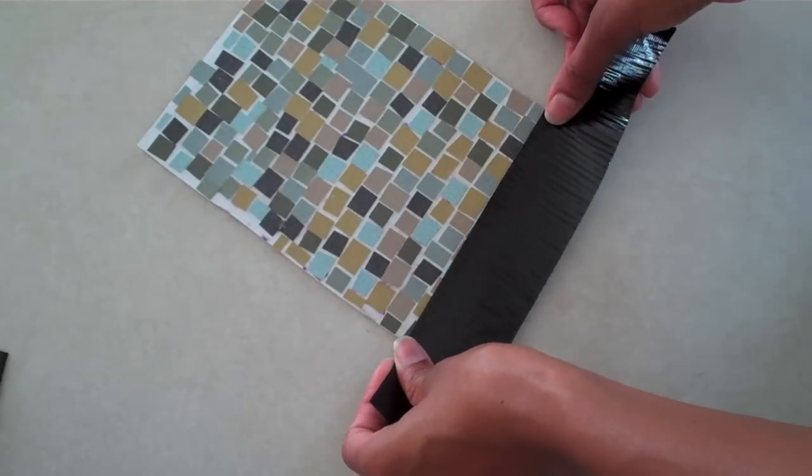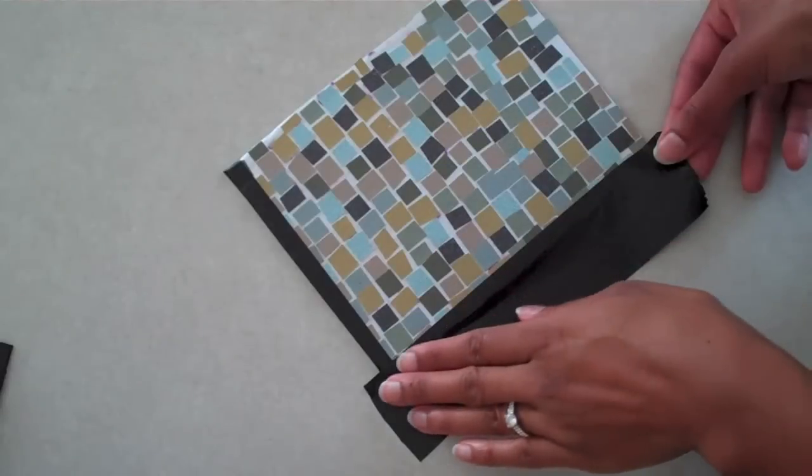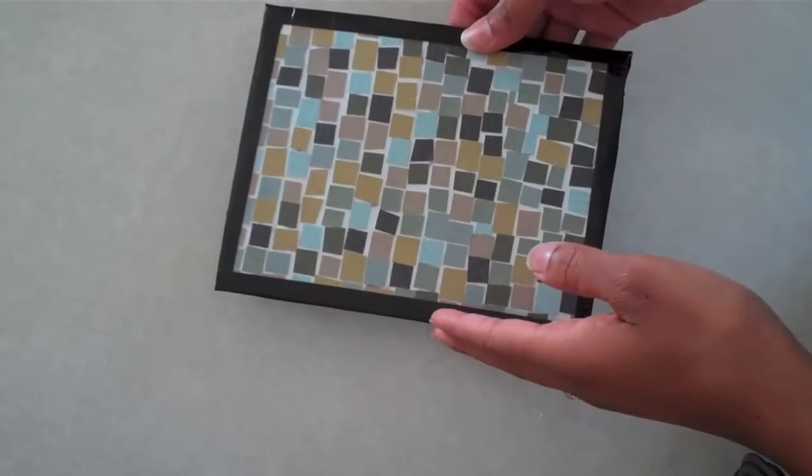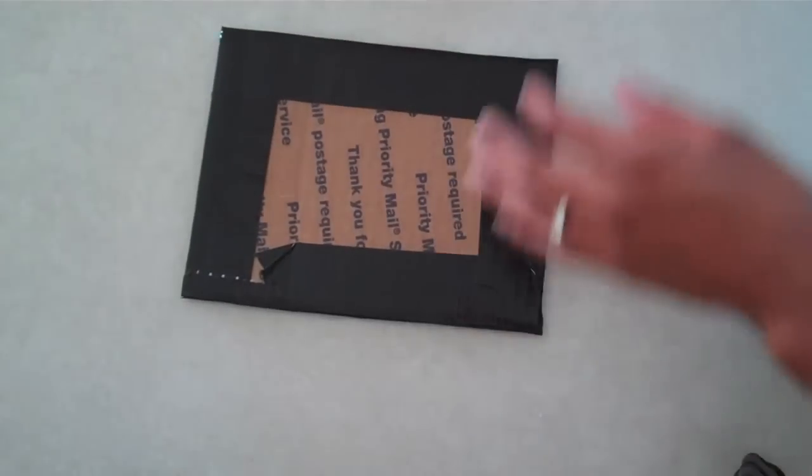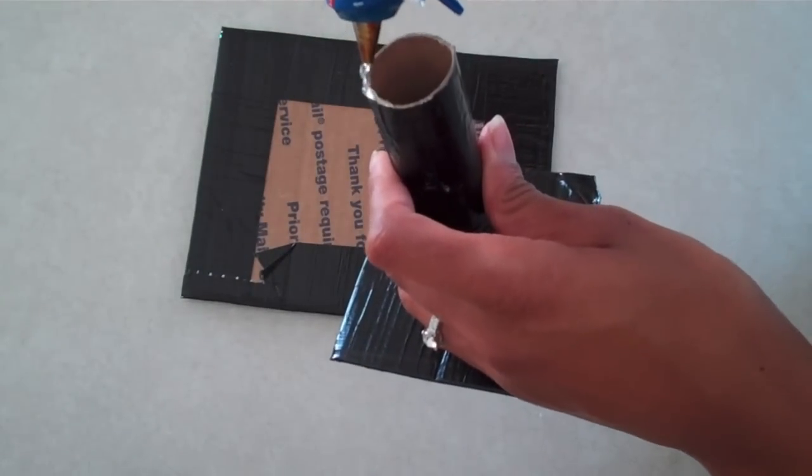Now I'm going to trim out the top of my table with a thin strip of duct tape, but this is completely optional. Once that's done, I'm going to flip it over and glue the top of the table onto the base.